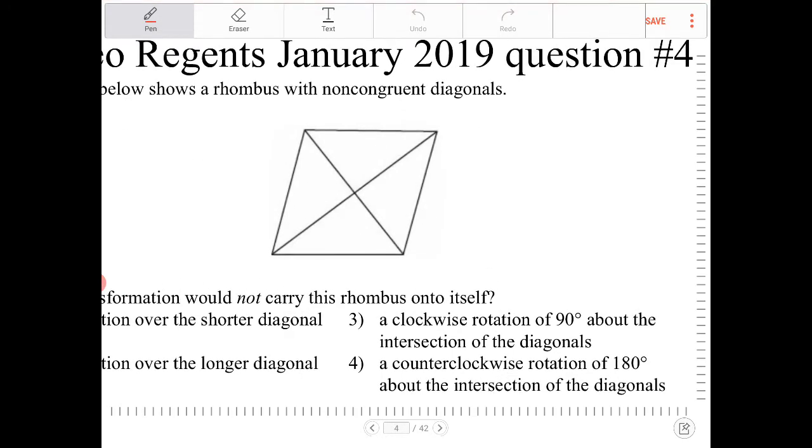Looking at this, I can see that the rhombus actually has two lines of symmetry, one going across one diagonal and the other going across the other diagonal.